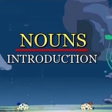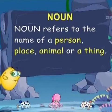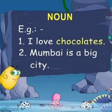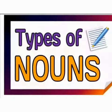Noun refers to the name of a person, place, animal or a thing. For example: I love chocolates. Mumbai is a big city. In these two sentences, chocolates are a name of a thing. Mumbai and city are names of places. So these are nouns. Children, I hope you have understood what is a noun.